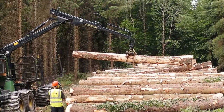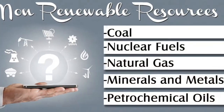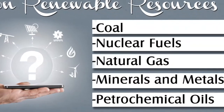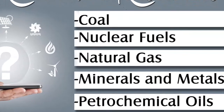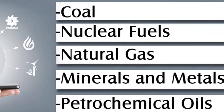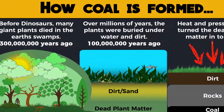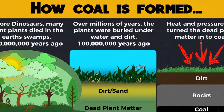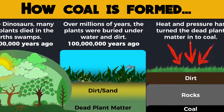By contrast, non-renewable resources continue to be formed in Earth, but the processes that create them are so slow that significant deposits can take millions of years to accumulate. For human purposes, Earth contains fixed quantities of these substances. When the present supplies are mined or pumped from the ground, there will be no more.